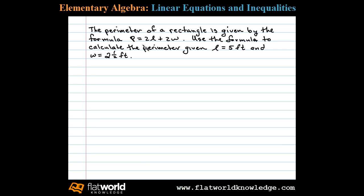The perimeter of a rectangle is given by the formula P = 2l + 2w, where l represents the length of the rectangle and w represents the width. Use this formula to calculate the perimeter given that the length is 5 feet and the width is 2 and a half feet.